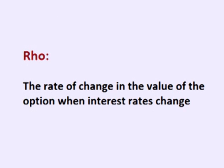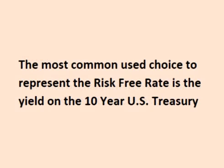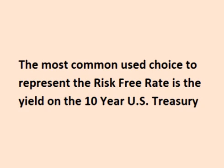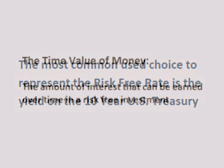Rho is the rate of change in the value of an option when interest rates change. Rho is the amount an option will change in value if there is a 1% change in the risk-free rate. The most commonly used rate for the risk-free rate is the U.S. 10-year treasury rate. When there is a change in interest rates, it means there is a change in the time value of money.